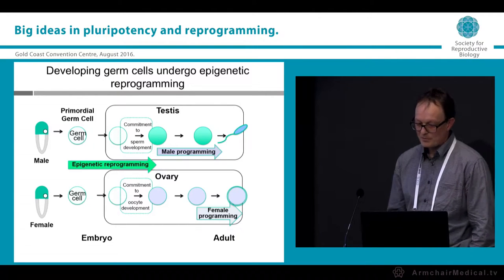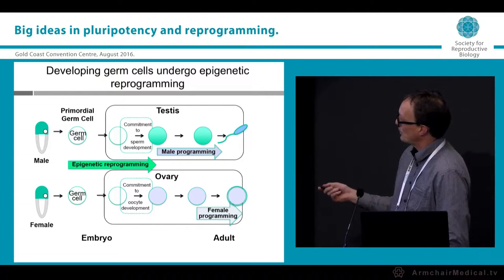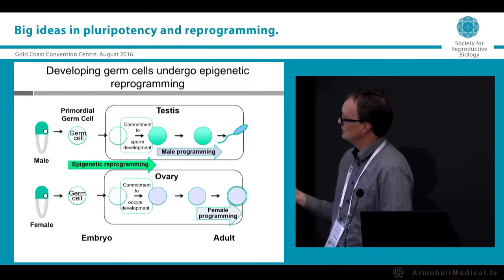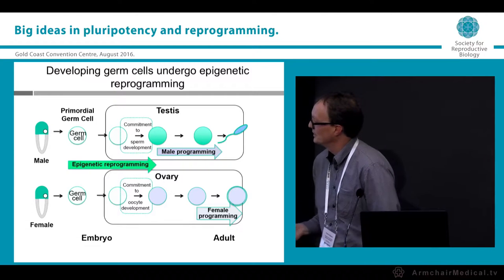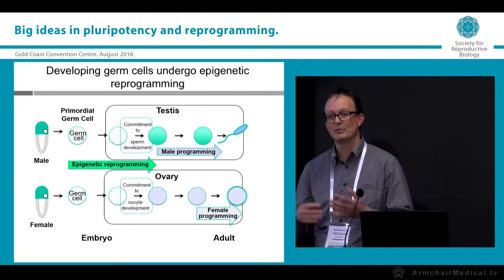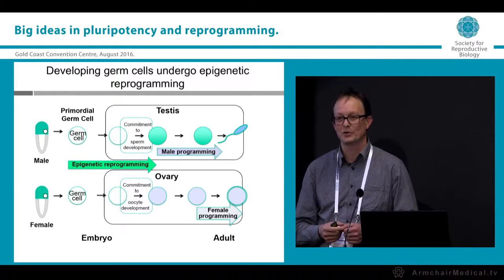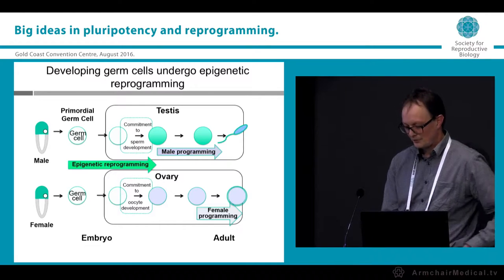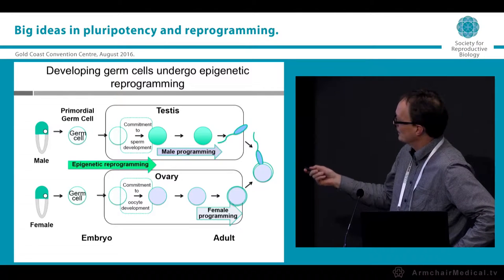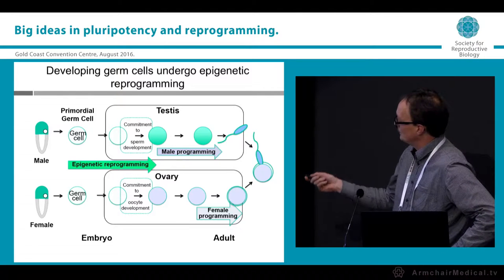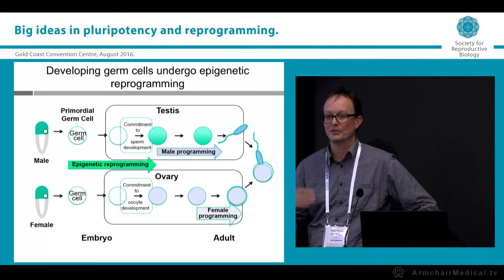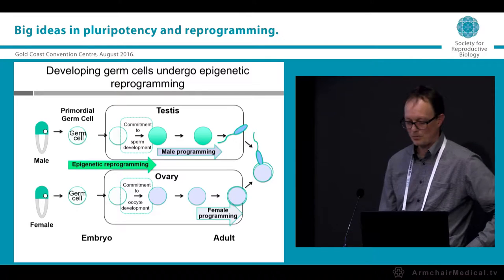This allows either male or female programming in the germline during spermatogenesis or oogenesis, and the establishment of an epigenome in sperm and oocytes that differs between the sexes. At fertilisation, these differences come together to complement each other and allow functional expression of the male and female genomes, enabling formation of an embryo and proper development thereafter.